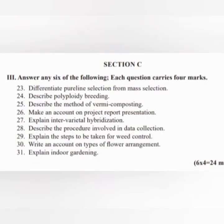Section C: Answer any six of the following. Each question carries four marks. Differentiate pure line selection from mass selection. Describe polyploidy breeding.